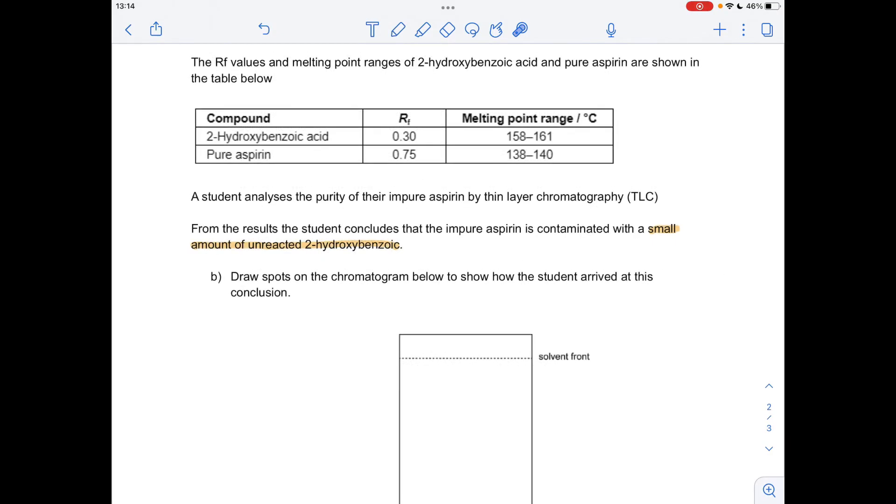For the next part of the question, it involves TLC or thin layer chromatography analysis. We've got information in the table about the RF values of 2-hydroxybenzoic acid, which is our starting material, and pure aspirin. We've also got their melting point ranges.